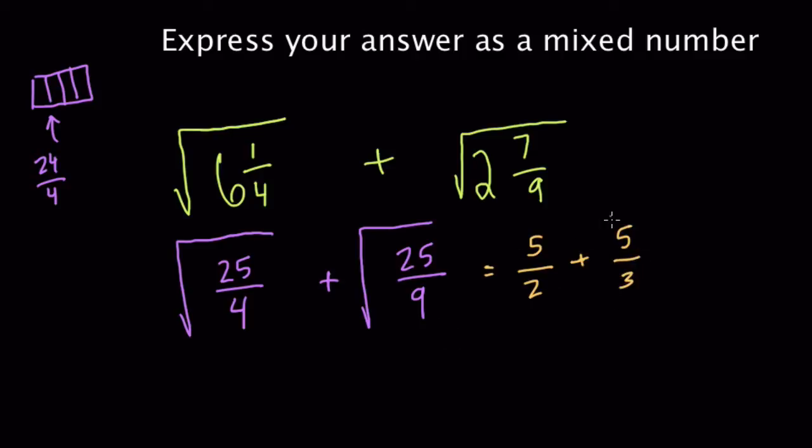We have 5 halves plus 5 thirds. With halves and thirds, you want to find a common denominator, which is 6. So I multiply my first fraction, 5 halves, by 3 over 3. And I multiply my second fraction, 5 thirds, by 2 over 2.